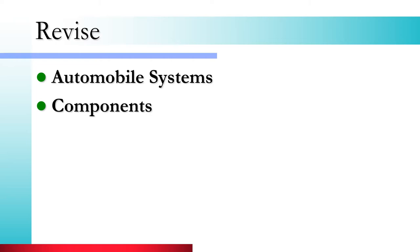Before we move on, you need to recall the knowledge from the past two videos, where we learned about automobile systems and components — how many types of systems are available, including transmission systems, control systems, suspension, and electrical and electronic systems. If you don't know these topics, please review those previous lectures first, then come back and we can study the classification of automobiles.